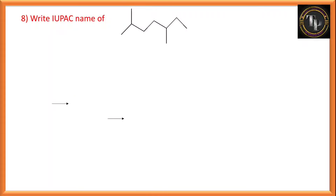Write the IUPAC name of the following compound. Counting from the left hand side: second position has a substituent. Counting from the right hand side: third position has the substituent. Lowest locant rule says we use the left side. The parent carbon chain contains seven carbon atoms. Substituents are at second and fifth positions — methyl groups. So the name is 2,5-dimethylheptane.